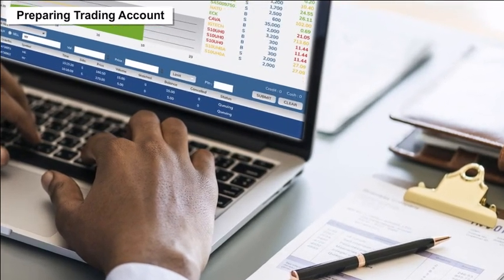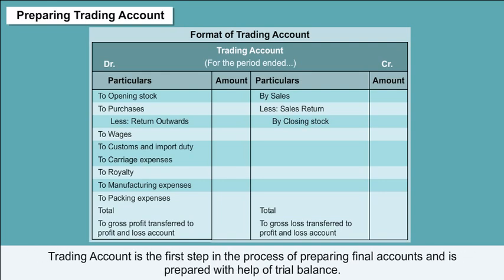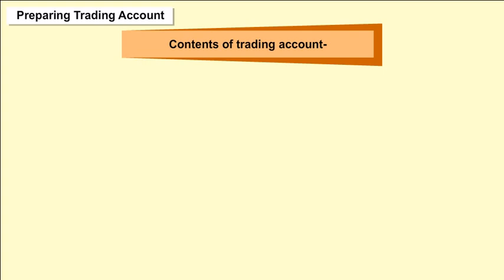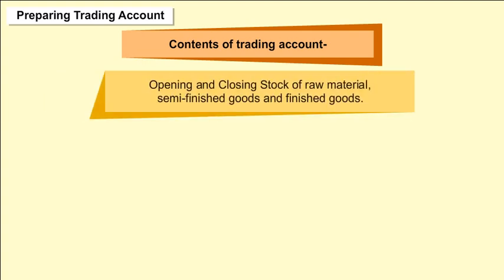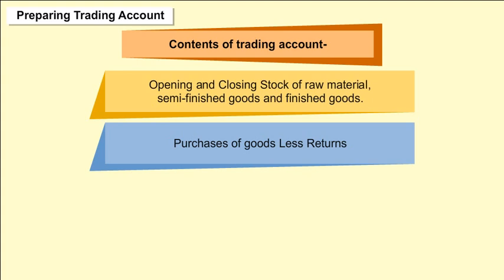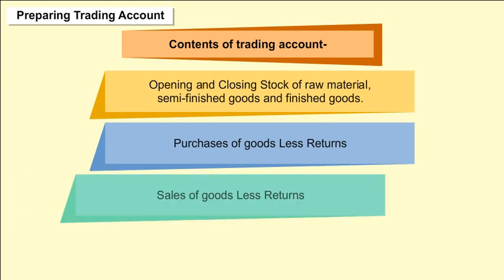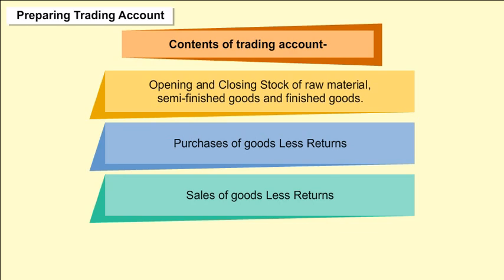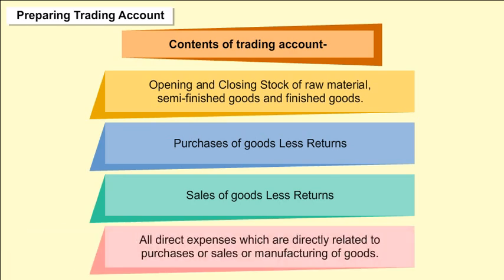Preparing trading account: The trading account is the first step in preparing final accounts and is prepared with the help of the trial balance. Contents of a trading account include: opening and closing stock of raw material, semi-finished goods, and finished goods; purchases of goods less returns; sales of goods less returns; and all direct expenses directly related to purchases, sales, or manufacturing of goods.